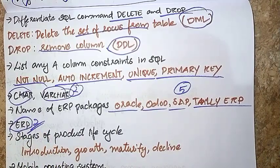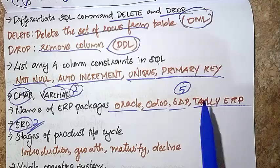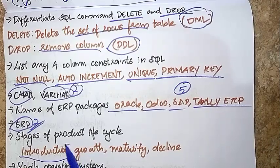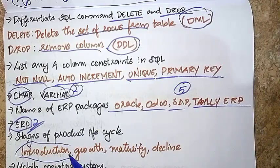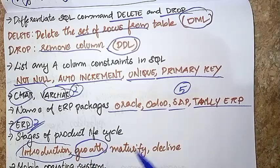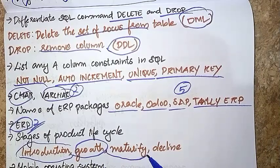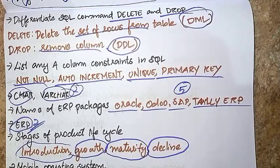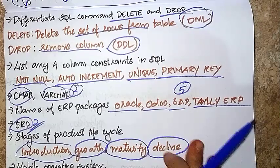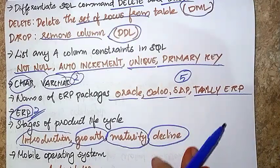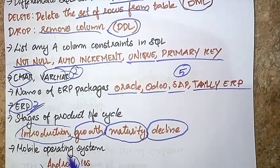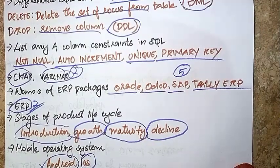Stages of Product Life Cycle: Introduction, Growth, and Decline. Mobile Operating Systems: Android and iOS.